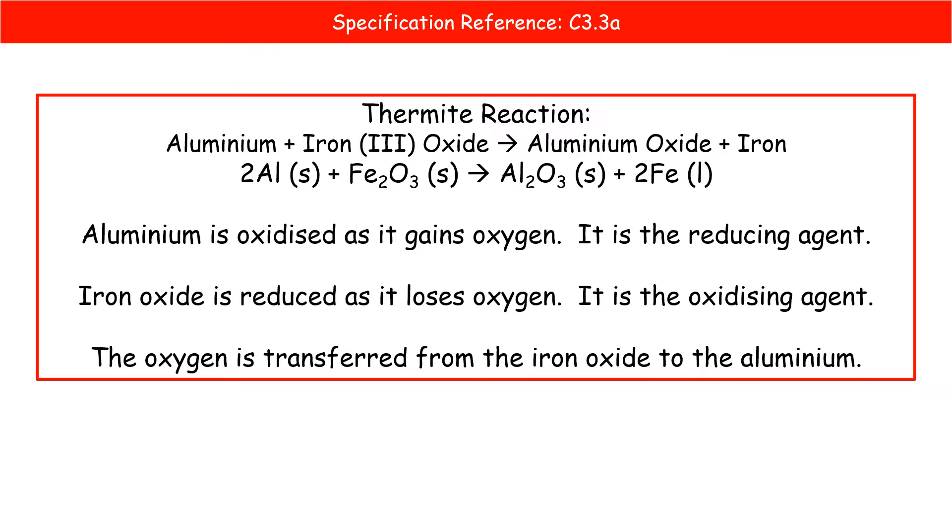Hopefully, if we have a quick look, if we focus on the aluminium first of all, we start with aluminium and we're then going to be making aluminium oxide. So if we go back to what we've said about oxygen, the aluminium is gaining oxygen. Therefore, it is oxidized.